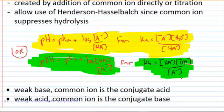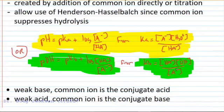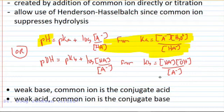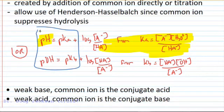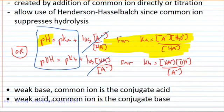Both forms apply at all times. Wherever the concentration of A- and HA are equal, we'll have pH equals pKa and pOH equals pKb simultaneously, because log of 1 is 0. It's just that normally a pH plot is what we use for titrations rather than pOH, so we typically say pH equals pKa at this point, but both are true.